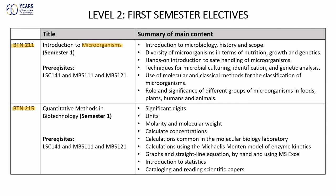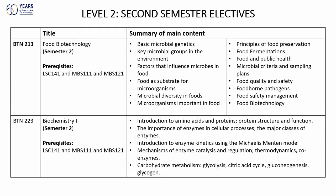For quantitative methods — BTN 215 — students who are very good in calculations prefer this module because it is all about biochemical calculations. In the second semester, students select only one from BTN 213, which is Food Biotechnology and is microbiology-related, or BTN 223, which is Biochemistry. BTN 223 introduces students to concepts such as amino acids, proteins, and other typical biochemistry topics. Students who love biochemistry usually prefer this to the microbiology module.